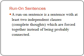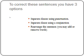First of all, what is a run-on sentence? A run-on sentence is a sentence with at least two independent clauses — two complete thoughts, two sentences that can stand alone — but they are forced together instead of being properly connected. In order to solve this problem and correct these sentences, you have three options: separate the clauses using punctuation marks, separate the clauses using a conjunction, or re-arrange the sentence by adding or removing words.